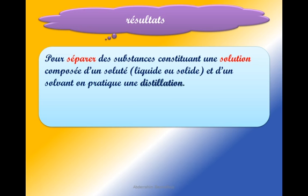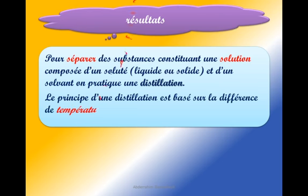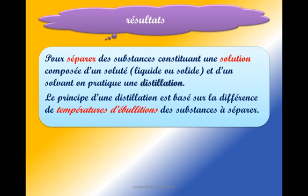Pour séparer des substances constituant une solution composée d'un solide-liquide et d'un solvant, on pratique une distillation. Le principe d'une distillation est basé sur la différence de température d'ébullition des substances à séparer. La première technique — extraction par solvant — est basée sur la différence de solubilité ; cette technique se base sur la différence de température d'ébullition.